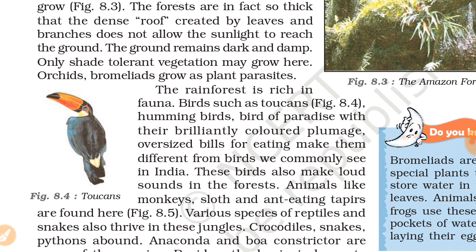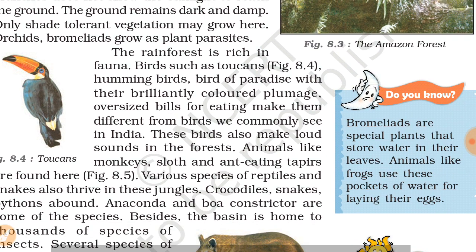Shade-tolerant means they are adapted to grow without direct sunlight, growing under shade. This type of vegetation has developed special plants such as orchids and bromeliads, which are plant parasites. There is rich fauna and flora. There is great animal variety - birds and other animals. Birds like toucans, hummingbirds, and birds of paradise have very brilliant colors.